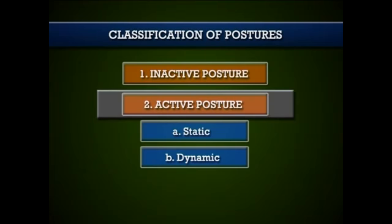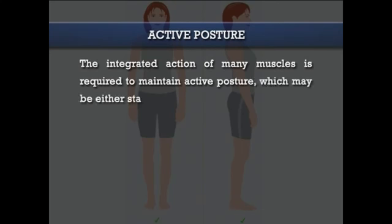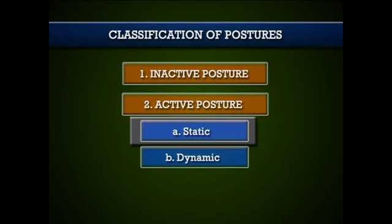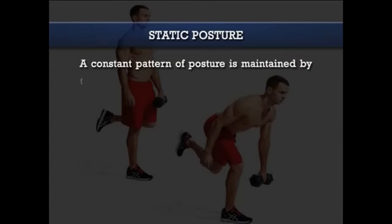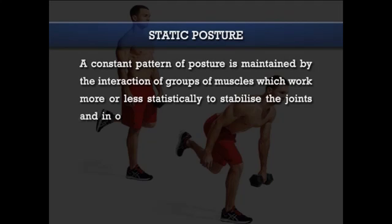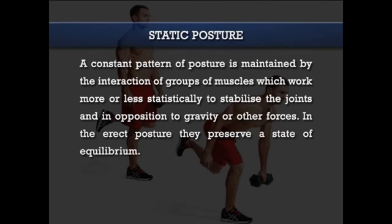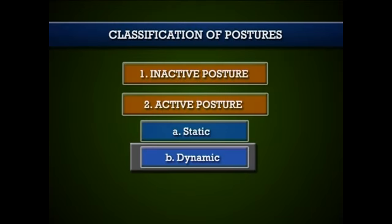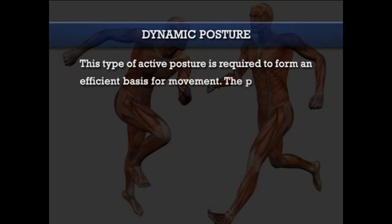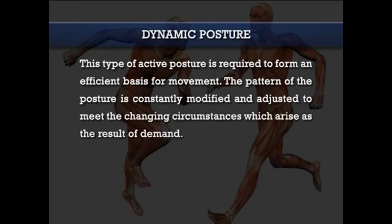The next one is active posture. The integrated action of many muscles is required to maintain active posture, which may be either static or dynamic. In static posture, a constant pattern is maintained by the interaction of groups of muscles working more or less statically to stabilize the joint in opposition to gravity, preserving a state of equilibrium. Dynamic posture is required to form an efficient basis for movement, with the pattern constantly modified and adjusted to meet changing circumstances.